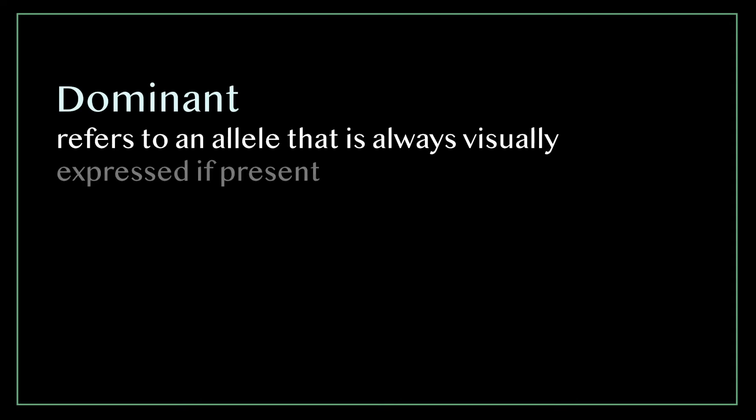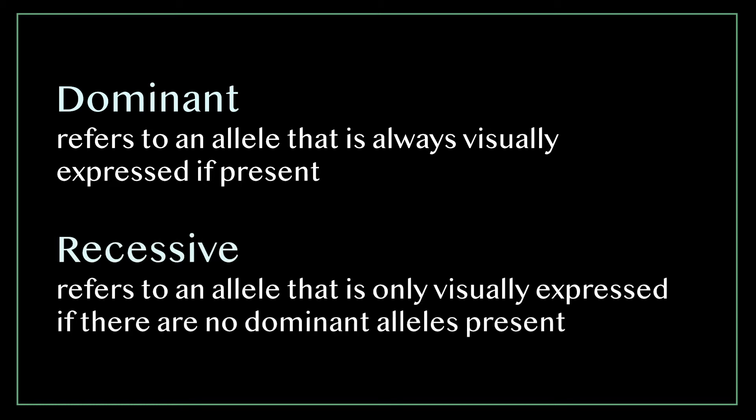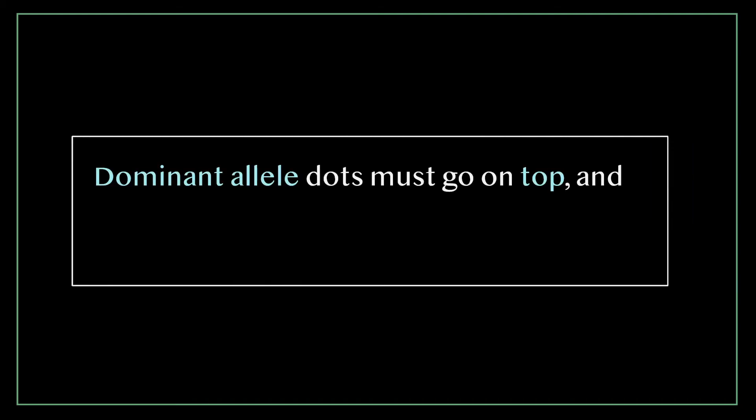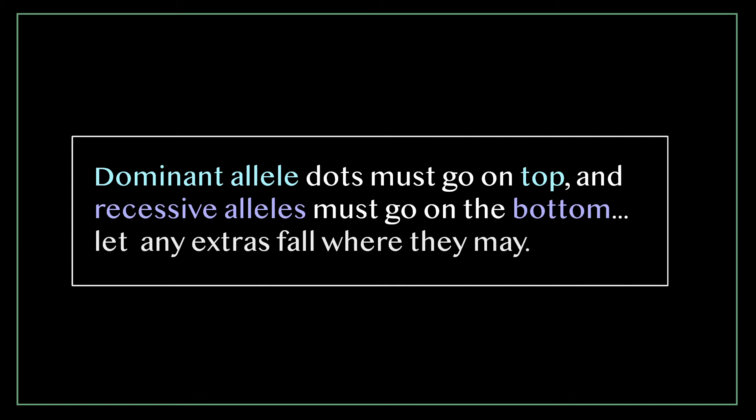This is the effect of dominant and recessive traits. A dominant allele is an allele that is always visually expressed if present. A recessive allele can be hidden. You'll only see the recessive trait phenotypically if there are no dominant alleles present. So as visual learners how can we understand this? Follow this one rule. Dominant allele dots must go on top and recessive alleles must go on the bottom. Let any extras fall where they may.